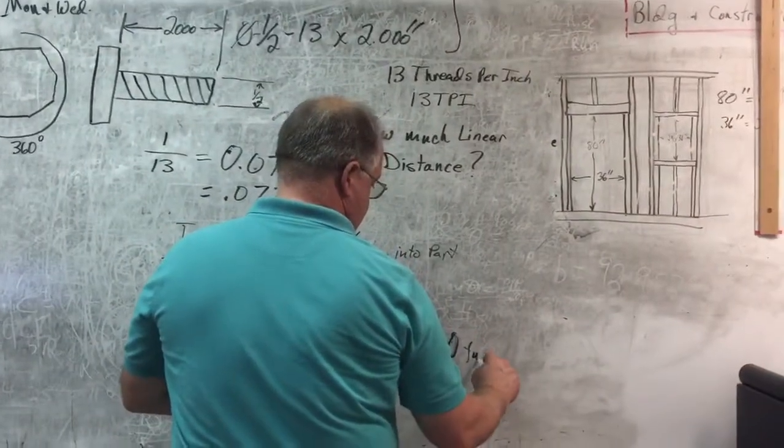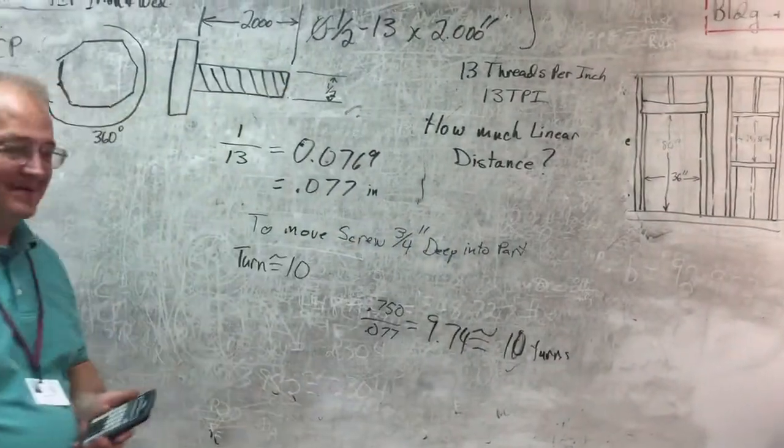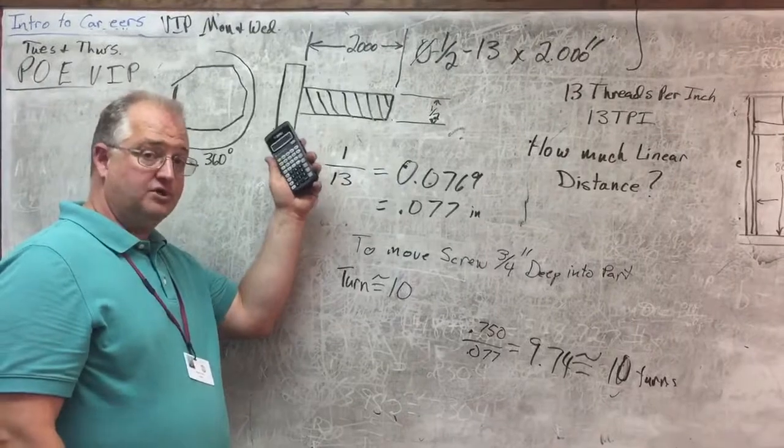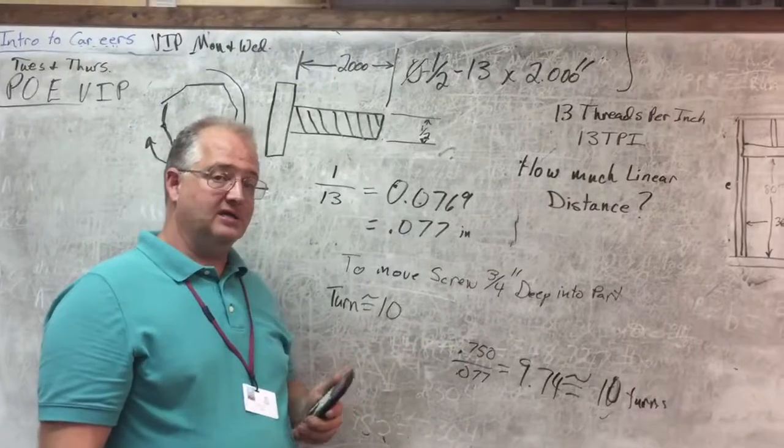Let me get a little bit neater here. Ten turns of my wrench. And this is how we can translate rotational motion or rotational movement of the screw into linear motion as well.